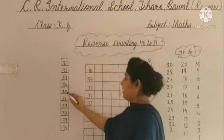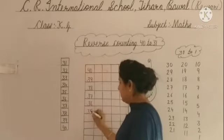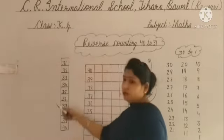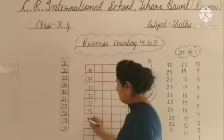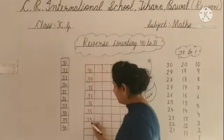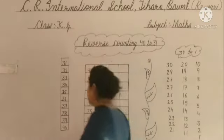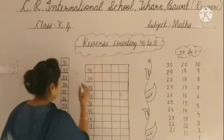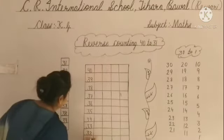तो यह आपको याद होनी चाहिए. और हम एक तरीका यह भी है कि 5 से before क्या होता है? 4, 3 भी. तो 3 की नहीं चलेगी, ठीक है? 34. 34 before? 33. क्योंकि 4 से before 3 होता है. ठीक है? 33 before? 32. और 32 before क्या होता है? 31.